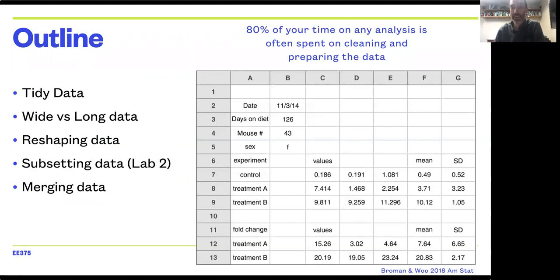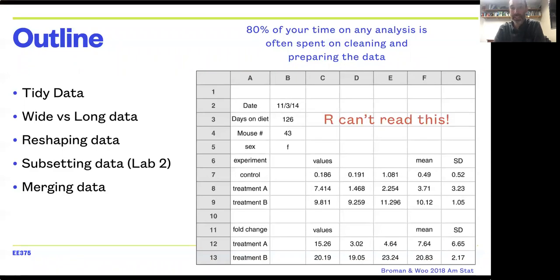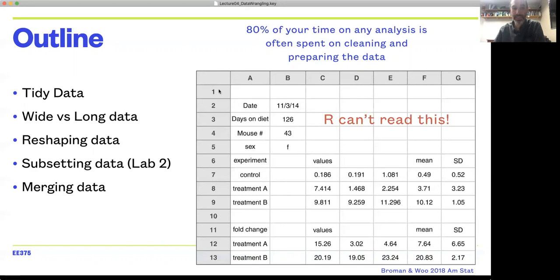This table here is a great example of really poorly formatted data. It's not the sort of thing that R is going to be able to read in and do much with. You've got a header row that's completely empty, so R wouldn't know what to do with that. You've got a bunch of metadata stored in rows before the actual data.